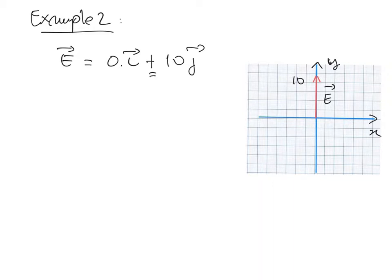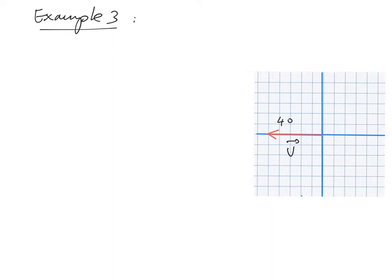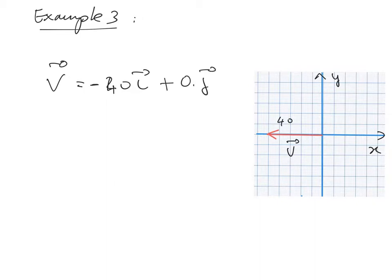E is directed along the positive Y and that's why we put a plus here. In example number three, we have a vector of magnitude 40 directed along the negative X. Therefore V is written as minus 40·I, because it's directed along the negative X, plus zero·J. There is no component along the Y axis, and V in component form is (−40, 0).